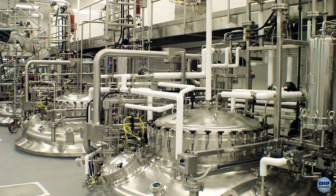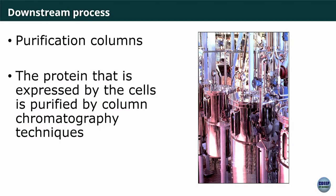In large manufacturing facilities, a 50,000-liter bioreactor is three stories tall and grows monoclonal antibodies. You can imagine the engineering required: all the tubes put media into the cells, take out media, handle sampling — it's a closed unit requiring immense engineering expertise. Purification columns are used downstream to purify the product.